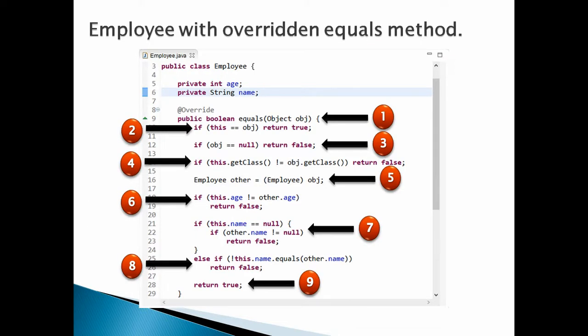Let's resolve the above issue by overriding the equals method in the Employee class. Friends, here 'this' points to the object calling the equals method, and 'other' points to the object coming as a parameter to the equals method. Number one, we override the equals method in the Employee class and place our own code in it. Number two, in order to test proper equality of employee1 and employee2, the code should go through various if-checks. First check: if this object == the object coming to equals method, then return true, as it signifies that employee1 and employee2 are referring to the same object.